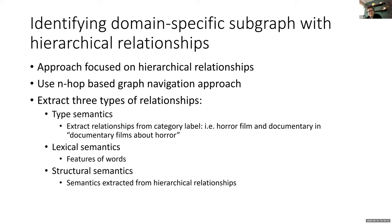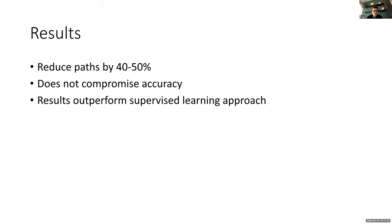The final section focuses on identifying domain-specific subgraphs with hierarchical relationships, using an N-HOP based graph navigation approach. They track three relationship types: type semantics (based on category labels — e.g., extracting 'horror film' and 'documentary' from a string), lexical semantics (properties of individual words), and structural semantics (extracted from hierarchical relationships between graph items). Results show a 40–50% reduction in number of paths without compromising accuracy, and the approach outperforms a supervised learning baseline.